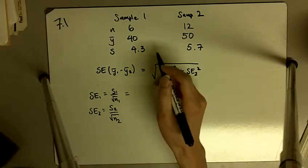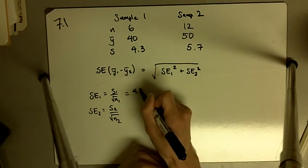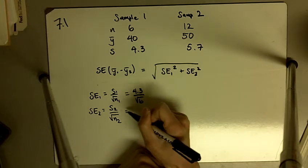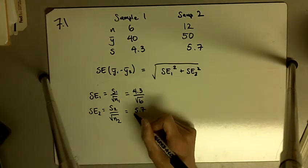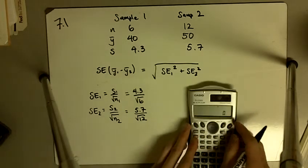So SE1 is going to be 4.3 divided by the square root of 6, and SE2 is going to be 5.7 divided by the square root of 12. I'm going to crunch this out.